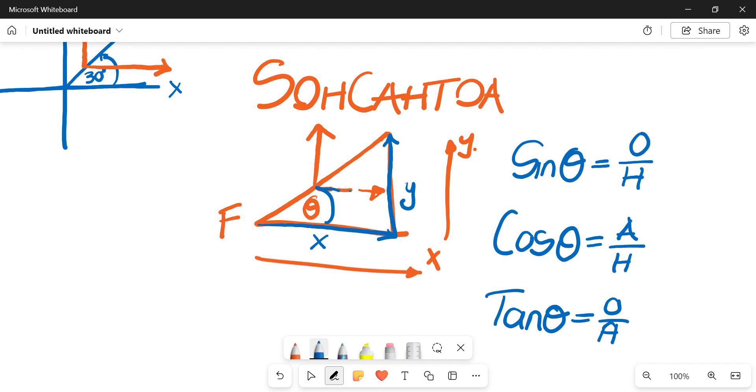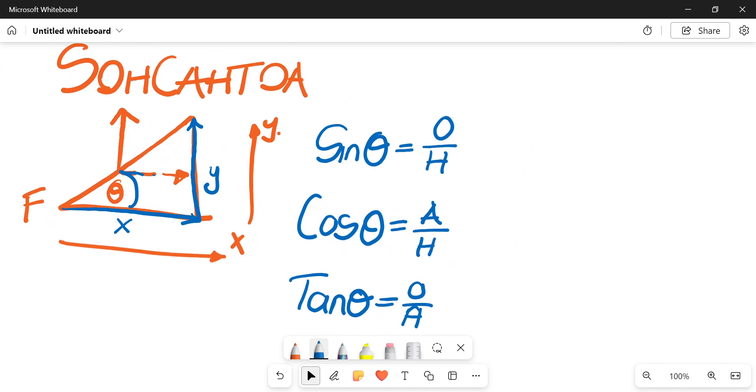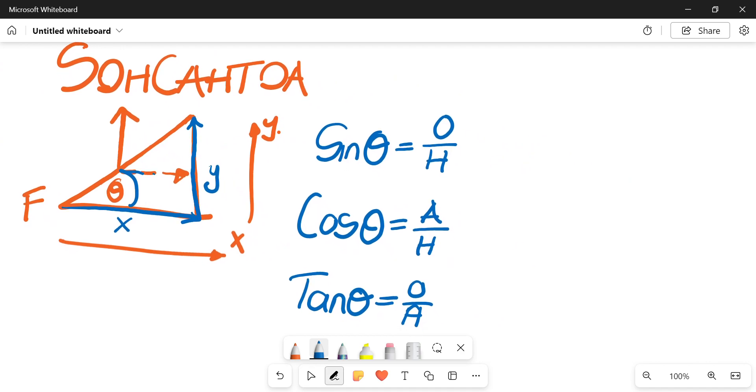So now we essentially need to represent each in terms of the known values that we have on here. Our sine of theta when looking at our triangle, our opposite would be our y. Our hypotenuse would be our force F. Then when you look at your cosine theta, your adjacent would be your x. Then your hypotenuse is your force F.